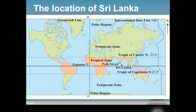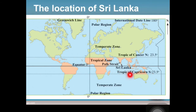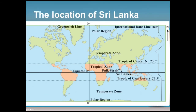Here you can see the location of Sri Lanka on a world map. Sri Lanka is located near the equator in the tropical zone, between the Tropic of Cancer and the Tropic of Capricorn. The zero-degree latitude is the equator; this is the Tropic of Cancer and this is the Tropic of Capricorn. This orange-colored area is the tropical zone, and Sri Lanka is located here within it.